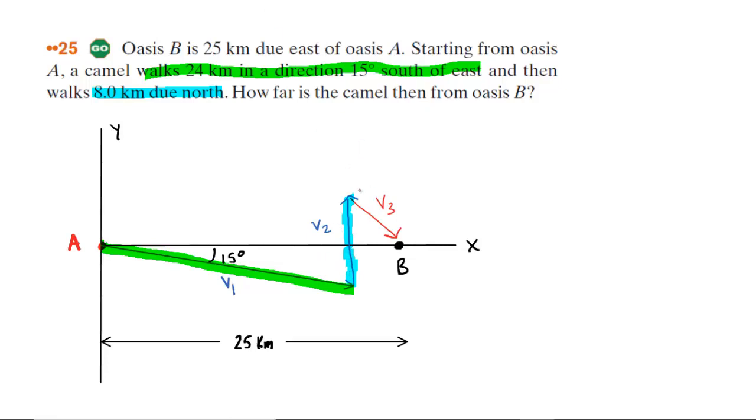And then what we can see is the camel ends up right here. So this little point is going to be the final position of the camel. But we need to figure out how far that camel would have to walk in order to reach point B. Now, we've labeled that distance with a third vector, and we're calling that V3. Now, here's the key insight. If we take vector 1 and then add that to vector 2, and then add that to vector 3, then we should end up at point B, as indicated by the diagram.